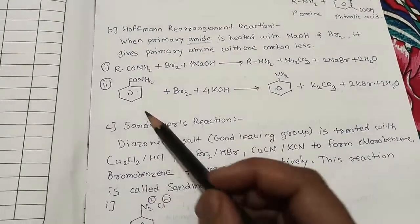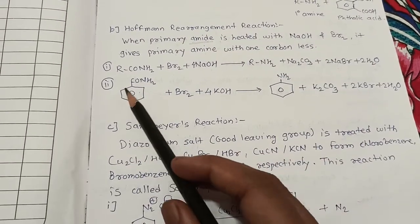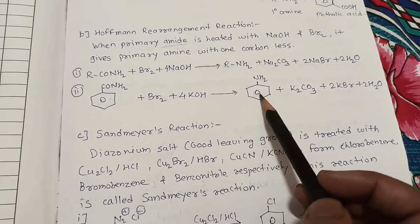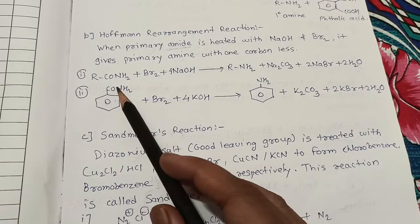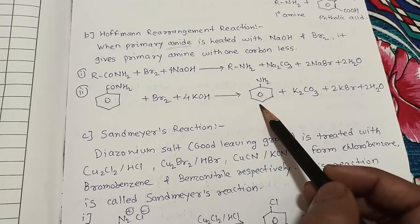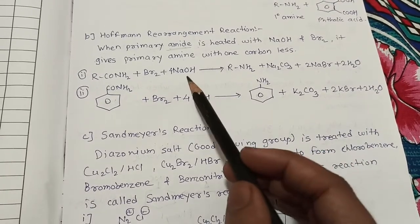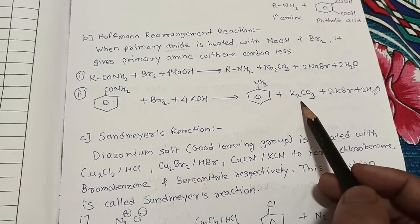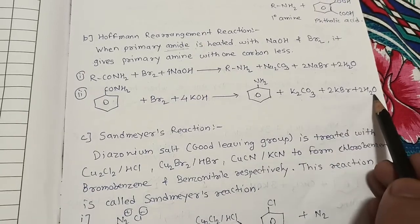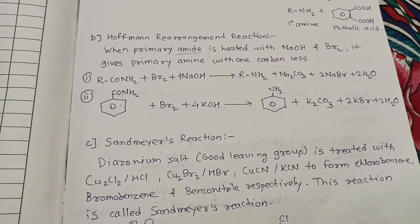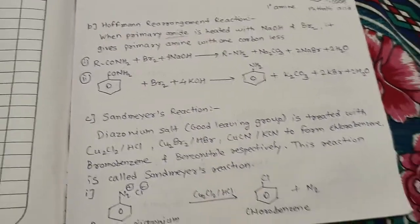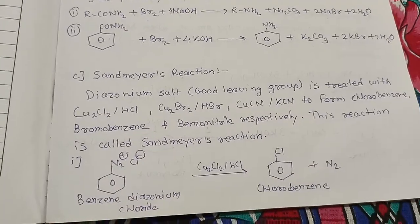For example, benzamide plus Br₂ plus 4KOH gives aniline. The CO of the amide goes out and primary amine — aniline — is obtained. Instead of NaOH, we can also use KOH, giving potassium carbonate, KBr, and water as byproducts. This is the Hoffmann rearrangement reaction, where amide is converted into amine.